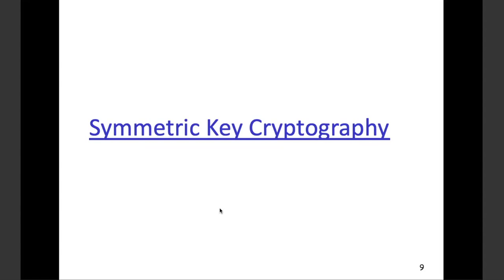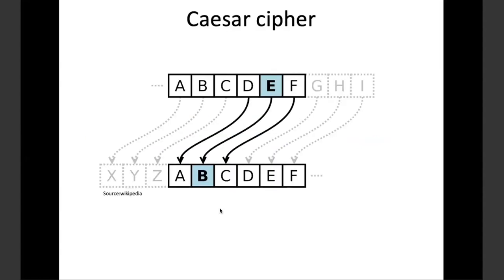If the keys are very large size, it will be difficult to break. For example, Caesar Cipher — when you start learning about encryption or cryptography, this is the first thing that comes to mind. It's one of the earliest known cipher texts, used by Julius Caesar in Rome.